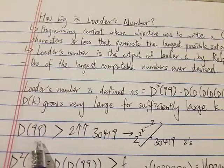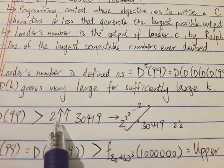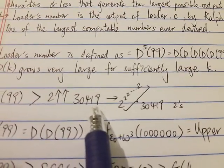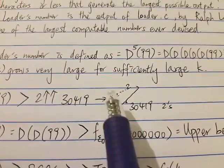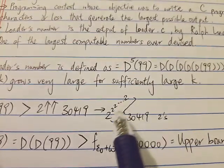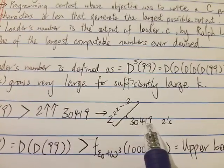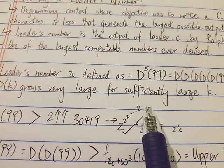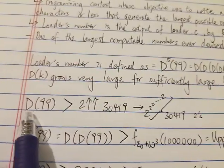So how big is D(99)? D(99) was shown to be way bigger than 2 double arrow 30,419. I think most of you know what this means - this number means a power tower of 2: 2 to the power of 2 to the power of 2 to the power of 2. How many twos are in this tower? There are 30,419 twos in this tower. This is very big, much bigger than googolplex or even googolplexplex, and this is just the output for D(99).